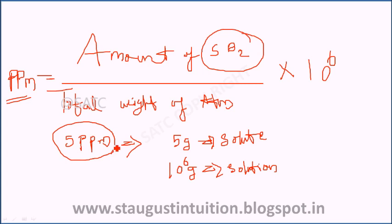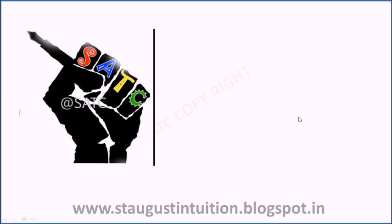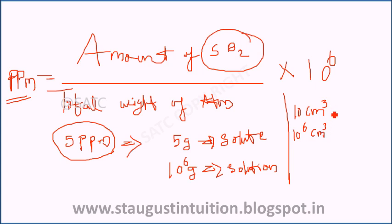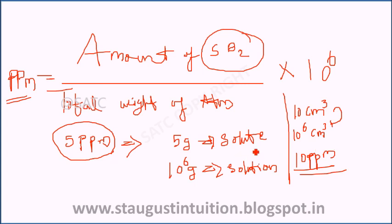The composition of a gas mixture is also expressed in ppm units based on volume ratio. For example, 10 centimeter cube out of 10 raised to 6 centimeter cube — so 10 ppm means 1 centimeter cube per 10 raised to 6 centimeter cube.